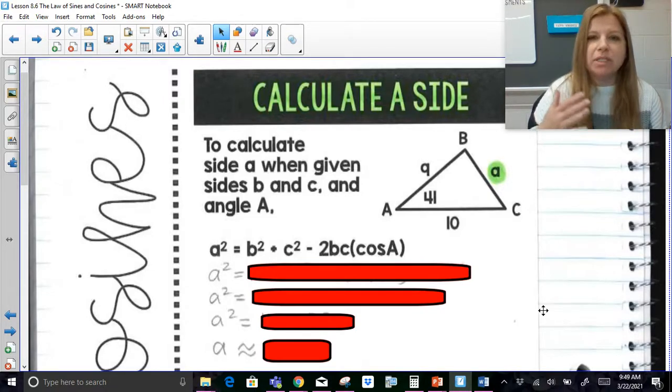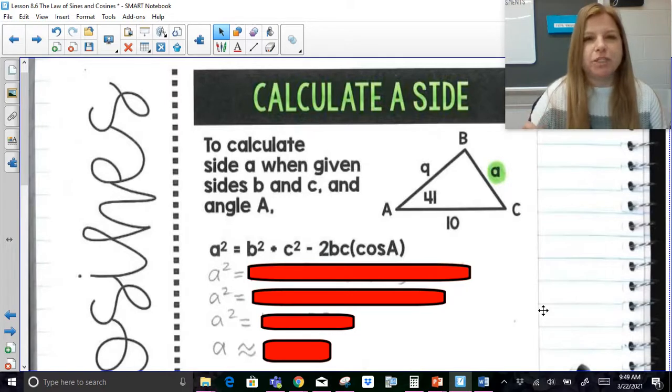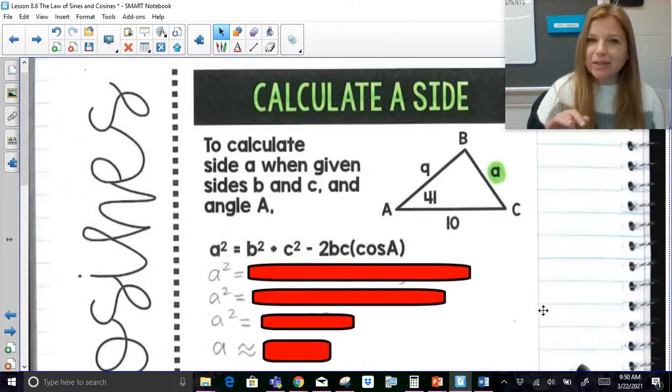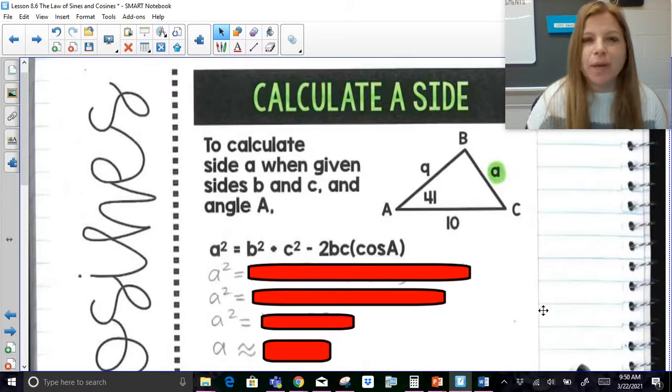Well, today what we're going to do is look at triangles where we couldn't use the law of sines, where we just did not have enough information in order to set up a proportion. And the law of cosines, although it's a kind of wacky looking formula, it's really easy to plug in. The calculator does the work for us. I'm going to be showing you how to plug it into your calculator to make sure you're getting all the correct values, and then we have our answer.